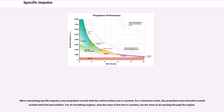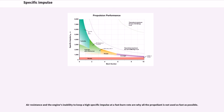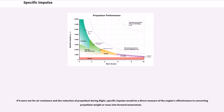For air-breathing engines, only the mass of the fuel is counted, not the mass of air passing through the engine. Air resistance and the engine's inability to keep a high specific impulse at a fast burn rate are why all the propellant is not used as fast as possible. A heavier engine with a higher specific impulse may not be as effective in gaining altitude, distance, or velocity as a lighter engine with a lower specific impulse. If it were not for air resistance and the reduction of propellant during flight, specific impulse would be a direct measure of the engine's effectiveness in converting propellant weight or mass into forward momentum.